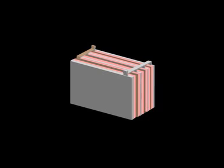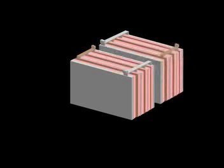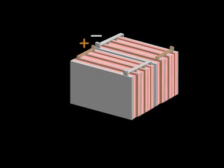Porous separators prevent contact between the negative and positive plates. The six cells are connected in series, positive to negative.